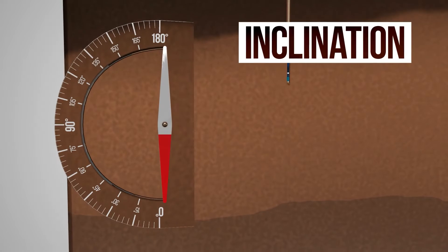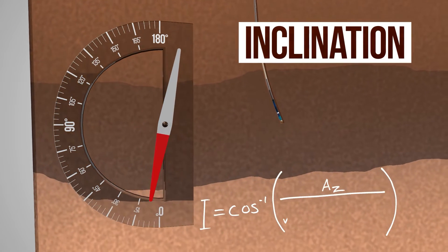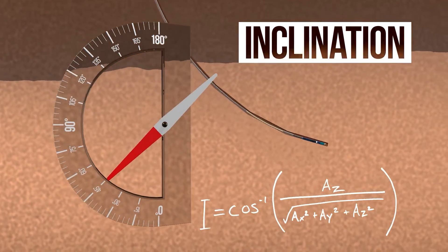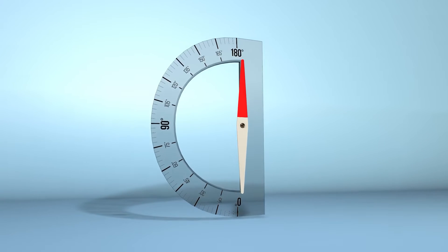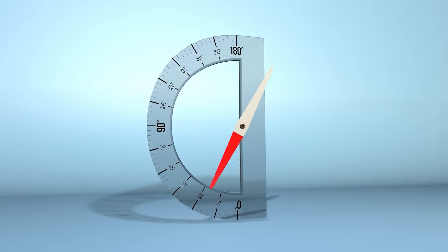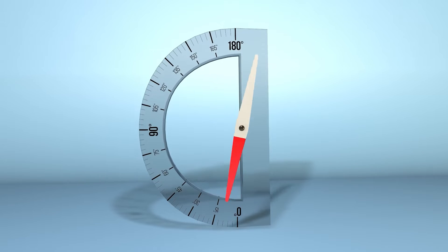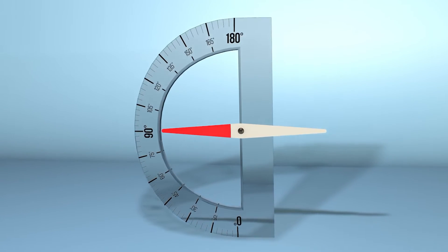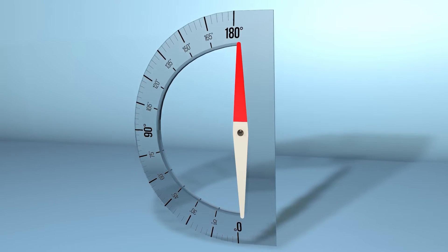Inclination is the angle from vertical to the MWD tool. Accelerometer sensors are used to determine inclination. Inclination ranges from 0 degrees to 180 degrees, where 0 degrees is oriented vertically down, 90 degrees is oriented horizontally, and 180 degrees is oriented directly up.